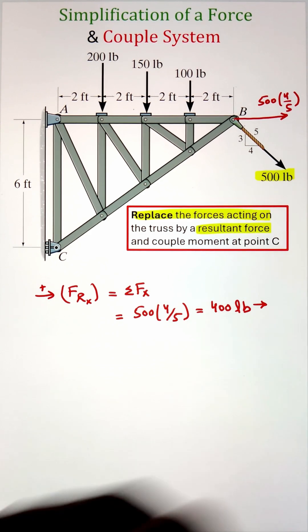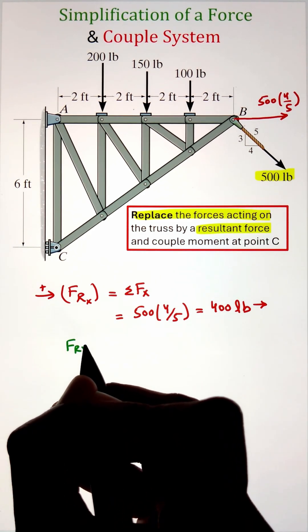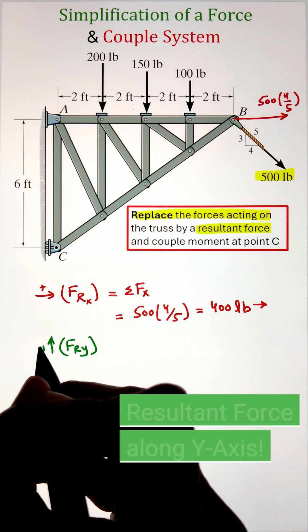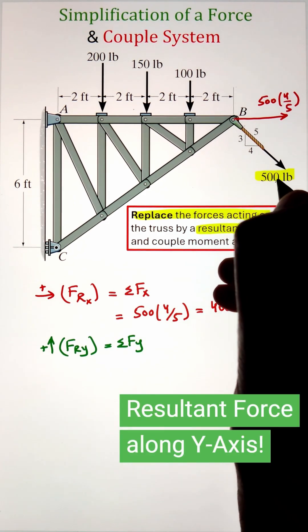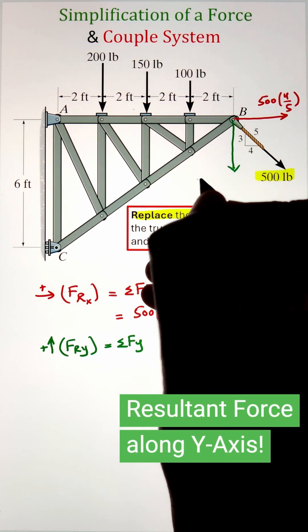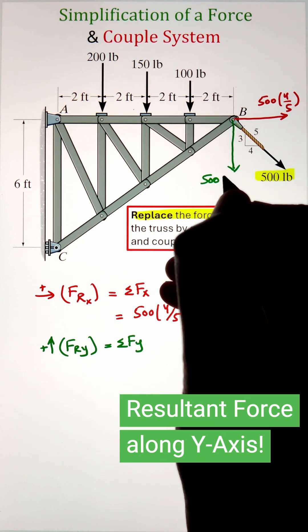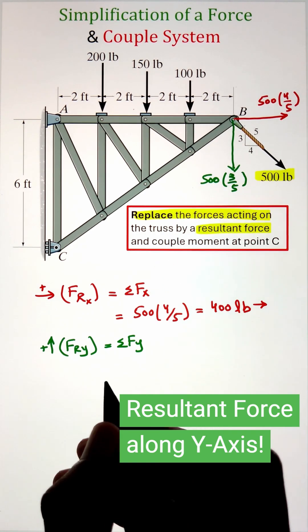Next we can add all the y components of the forces acting on the truss. In this case we're starting with the 500 pound. If we multiply it with 3 over 5, it is going to give the y component. In this case it is pointing downward so we will take it as negative.